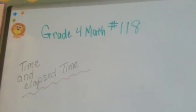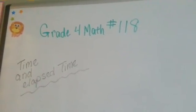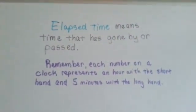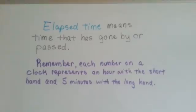Grade 4 math number 118, Time and Elapsed Time. Elapsed time means time that has gone by or passed.